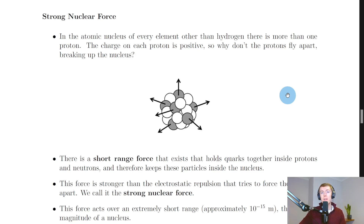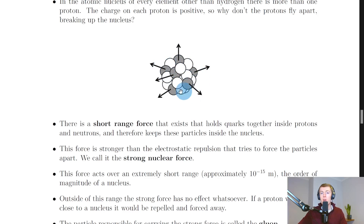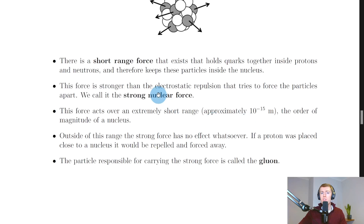Starting with the strong nuclear force: in the atomic nucleus of every element other than hydrogen there's more than one proton. The charge on each proton is positive, so why don't the protons fly apart breaking up the nucleus? There is a short-range force that holds quarks together inside protons and neutrons, and therefore keeps these particles inside the nucleus. This force is stronger than the electrostatic repulsion that tries to force the particles apart. We call it the strong nuclear force.